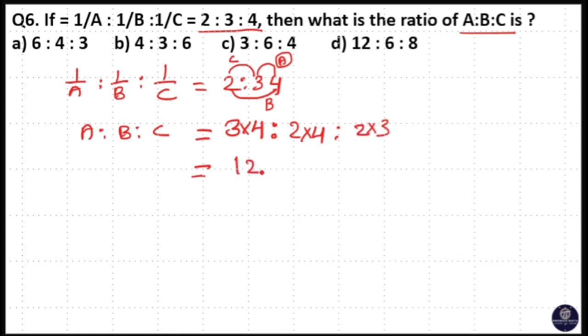So A:B:C = 12:8:6. When you simplify by dividing by 2, you get 6:4:3. Therefore, the A:B:C ratio is 6:4:3. Option A is your answer.